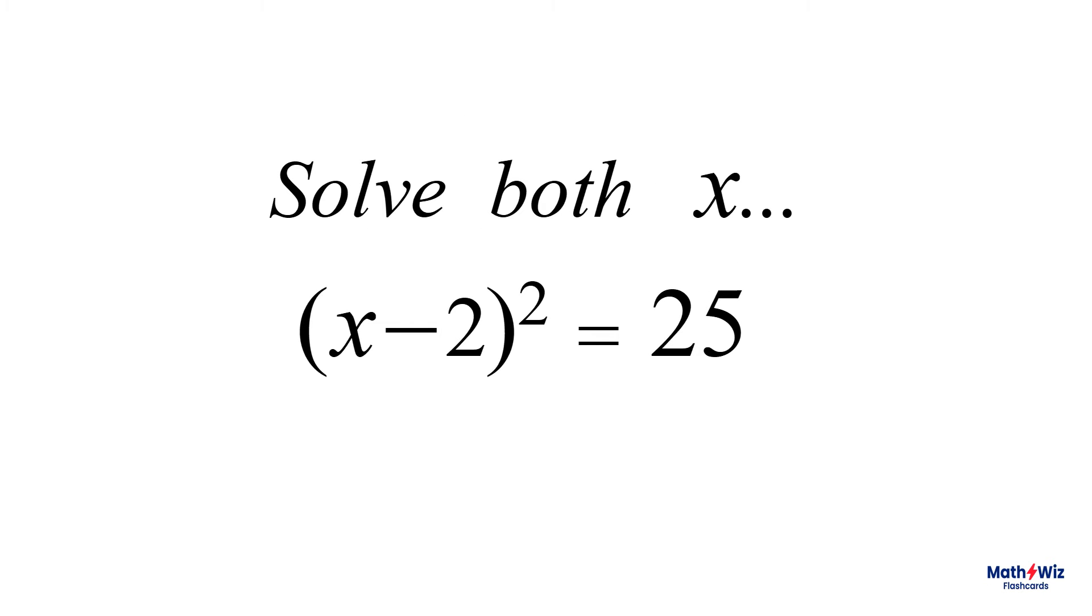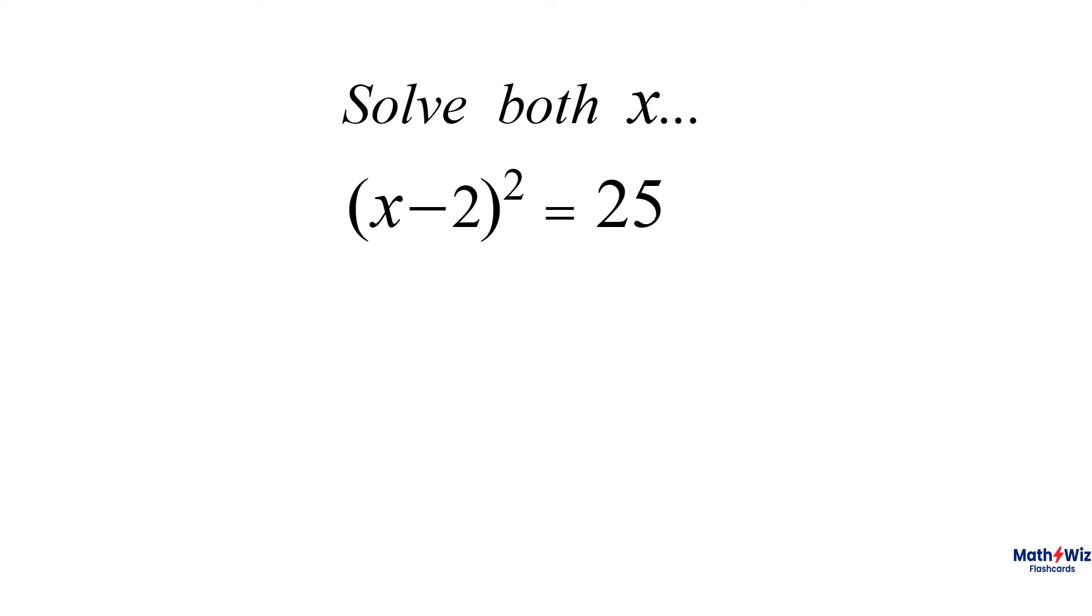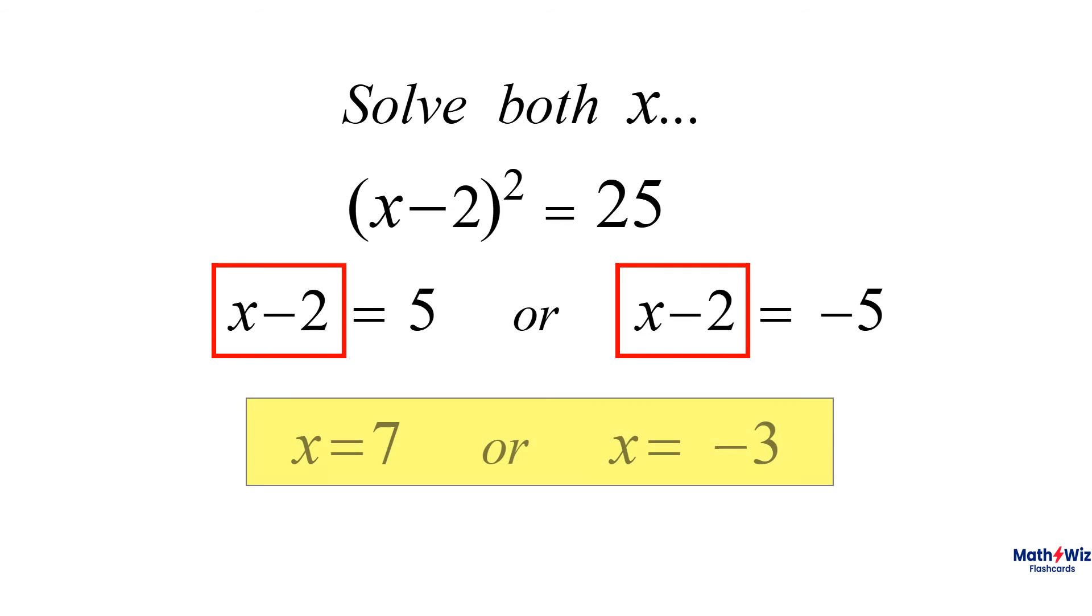In our second example, quantity squared equals 25. Therefore, quantity x minus 2 equals 5, or negative 5. So x equals 7, or negative 3.